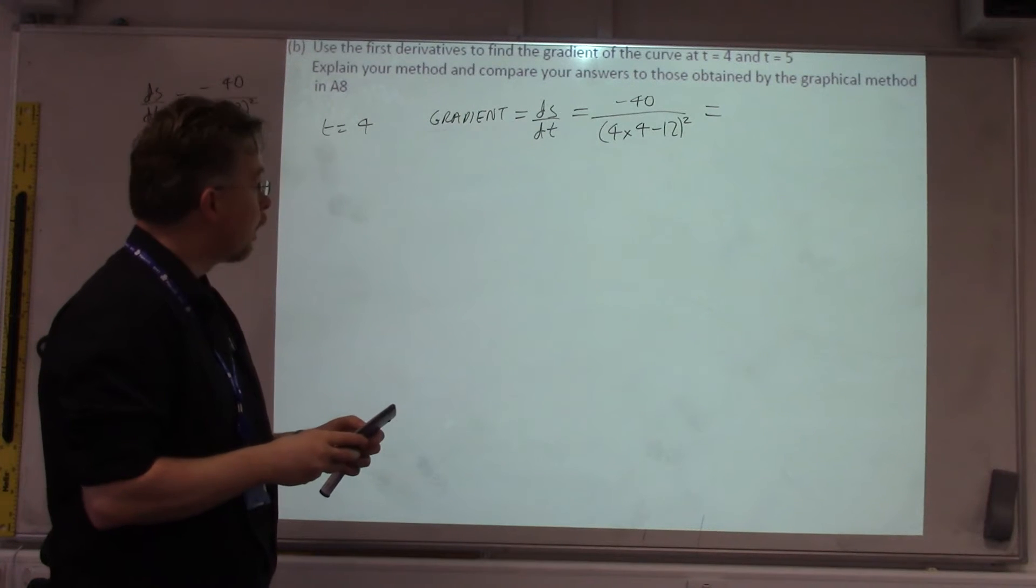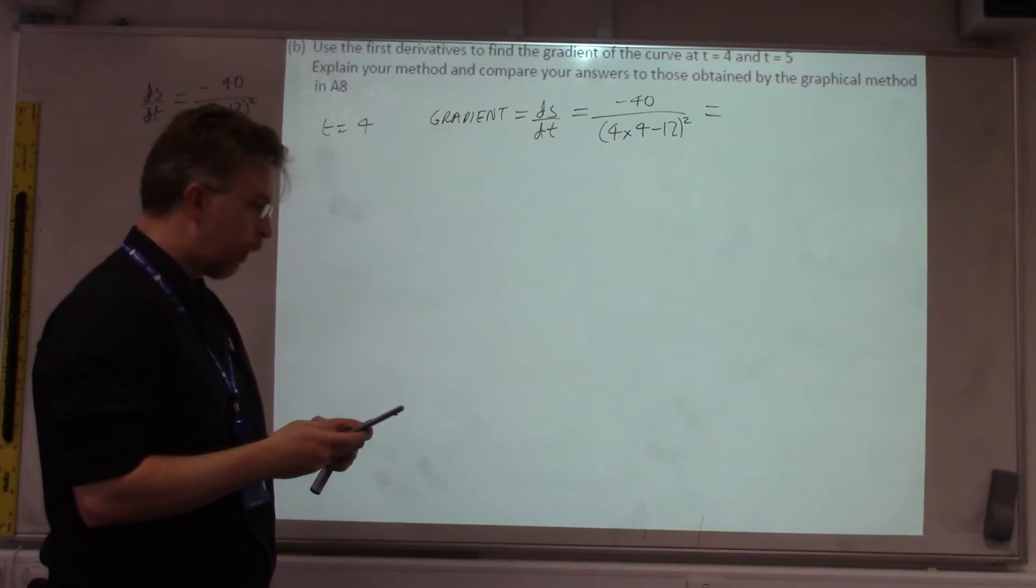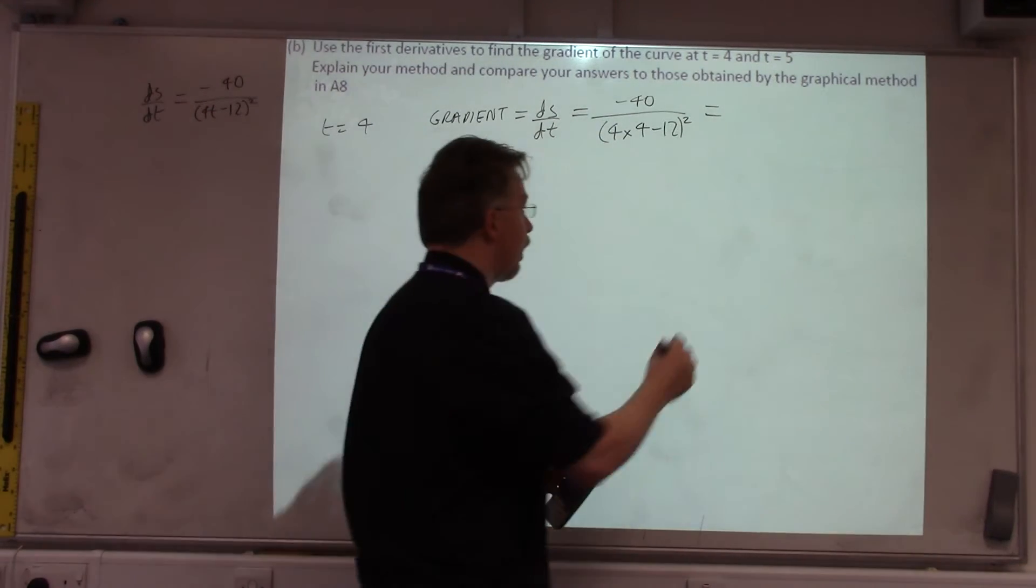So, we need to stick that into a calculator. So, minus 40 over bracket, 4 times 4, minus 12, close bracket, squared, is minus 2.5.